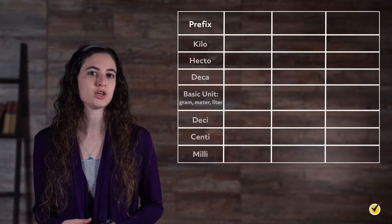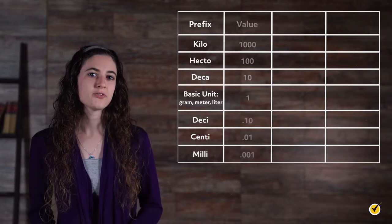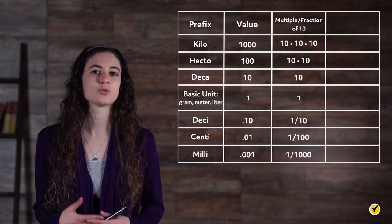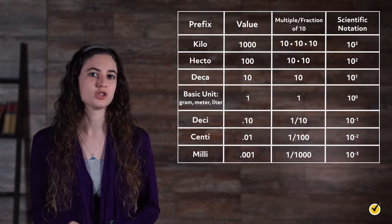Metric units follow a base 10 system, meaning that converting between units will simply be a matter of multiplying or dividing by 10. This table shows the ordering of the prefixes in relationship to the basic unit, along with the numeric value, multiple or fraction of 10, and its representation in scientific notation.